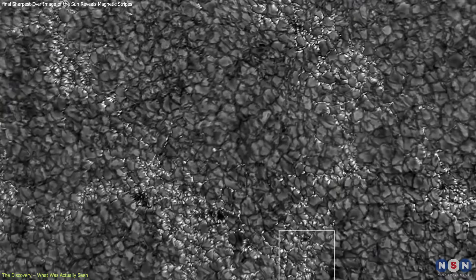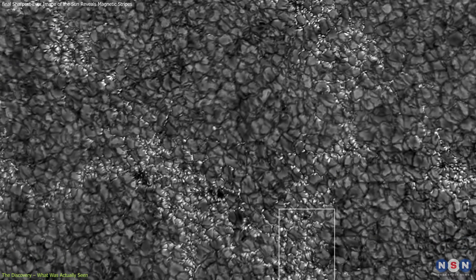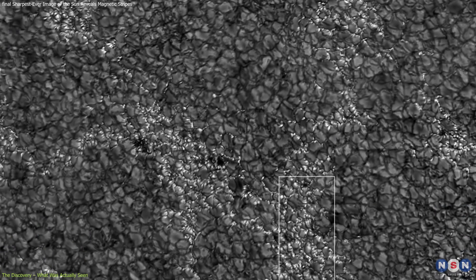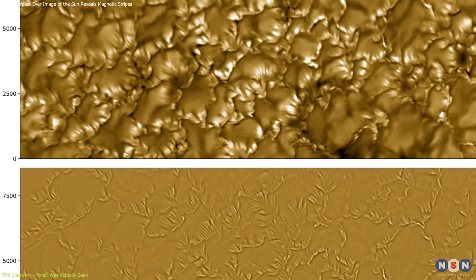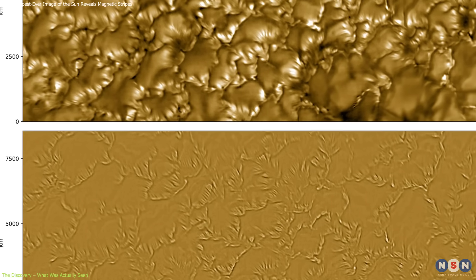The discovery focuses on fine, bright and dark stripes along the edges of solar granules, convective cells on the Sun's surface. These patterns weren't tied to any major solar event. They appeared during routine high-resolution imaging.